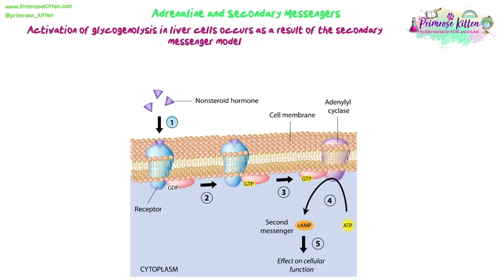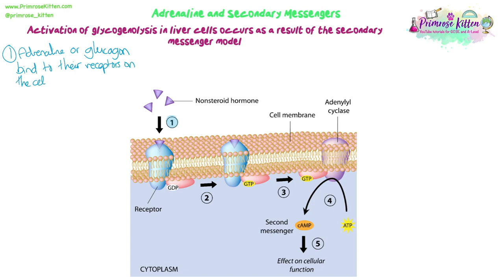We're looking at both hormones because they trigger the activation of glycogenolysis in liver cells through this secondary messenger model. Both adrenaline and glucagon can do this — they bind to their receptors on the cell membrane of liver cells, and these are classed as the first messengers. The adrenaline and glucagon have been secreted in response to low blood glucose levels, and their aim is to cause a change in the liver cells that will release glucose into the blood.